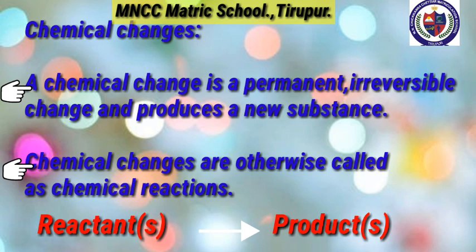A chemical change is a permanent, irreversible change that produces a new substance. Chemical changes are otherwise called chemical reactions, because one or more substances — that is, reactants — undergo a reaction to form one or more new substances — that is, products. So reactants give products.